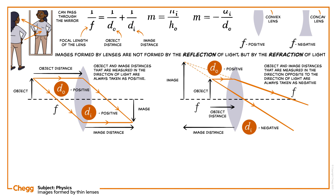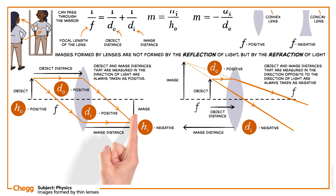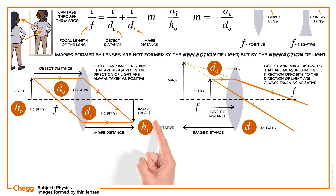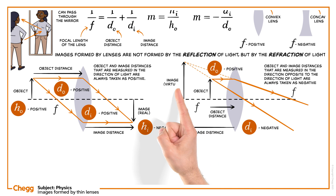We can see the images formed in the figure. Object height is positive and image height is negative. If the image distance is positive, then the image is said to be real, and if the image distance is negative, then the image is said to be virtual.